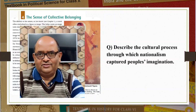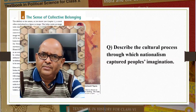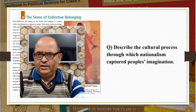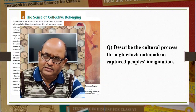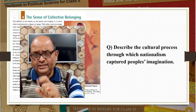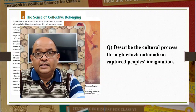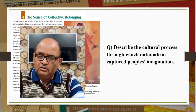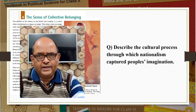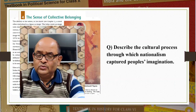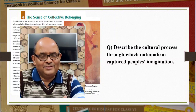Fifth, reinterpretation of history: Indians wrote about the glorious developments in ancient times when art and architecture, science and mathematics, religion and culture flourished. India saw a decline with the coming of colonial power. Therefore, it was propagated that it was necessary to do away with British rule in order to achieve that past glory.